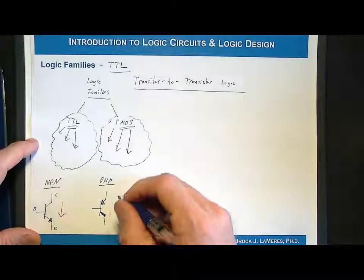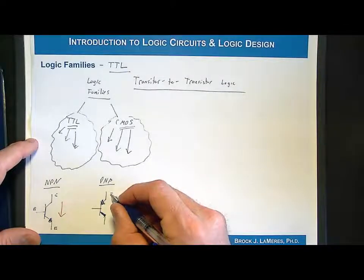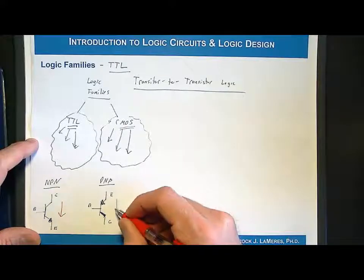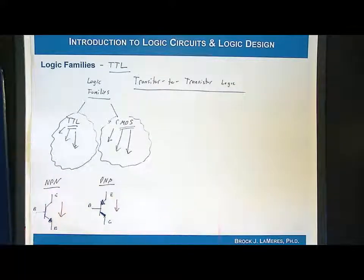On a PNP, the emitter is up here, the collector is here, and the base is right here. It's very similar - current flows like this and it's controlled by the base.